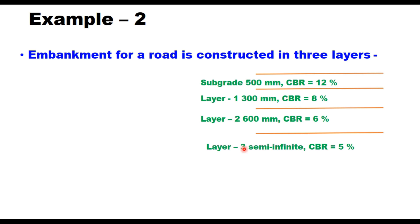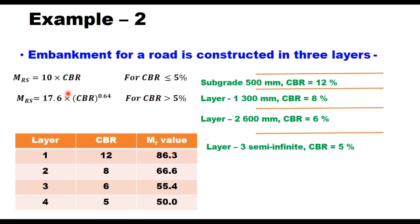And you can find out the MR value of each layer from their corresponding CBR value using this equation. If CBR is less than equal to 5, you take 10 times CBR. If it is more than 5, you take this value. So layer 3 has a CBR 5, so its value is 50 MPa. And layer 1 has a CBR of 12 percent, so its value is 86.3 MPa. Similarly layer 2, layer 3, we calculate MR value of these four layers. And now you perform four layer analysis in IIT PAVE software using these values of MR. Mu value is to be taken 0.35 for all layers. Pressure 0.56, wheel load 40,000 Newton, and carry out the analysis and find out what is the surface deflection of this structure.